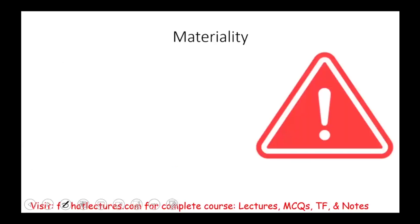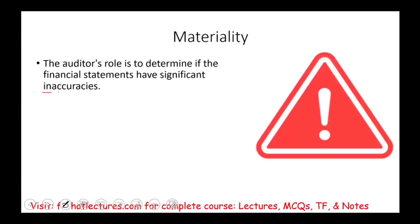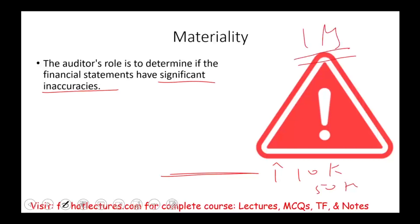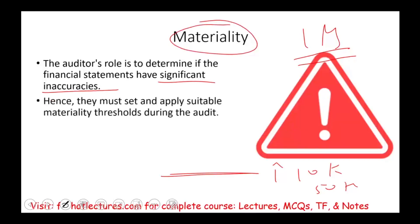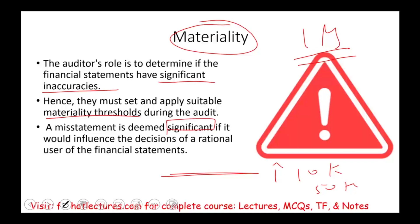The auditor will also have to set materiality. The auditor's role is to determine if the financial statements have significant inaccuracy — significant meaning above a certain level, and that level is materiality. Whether it's $10,000, $50,000, or $1 million depends on the client — each audit is different. They must set and apply a suitable materiality threshold. A misstatement is material when it would influence the decision of a rational user of the financial statements. Simply put, if it influences someone's decision about the company, it's material.